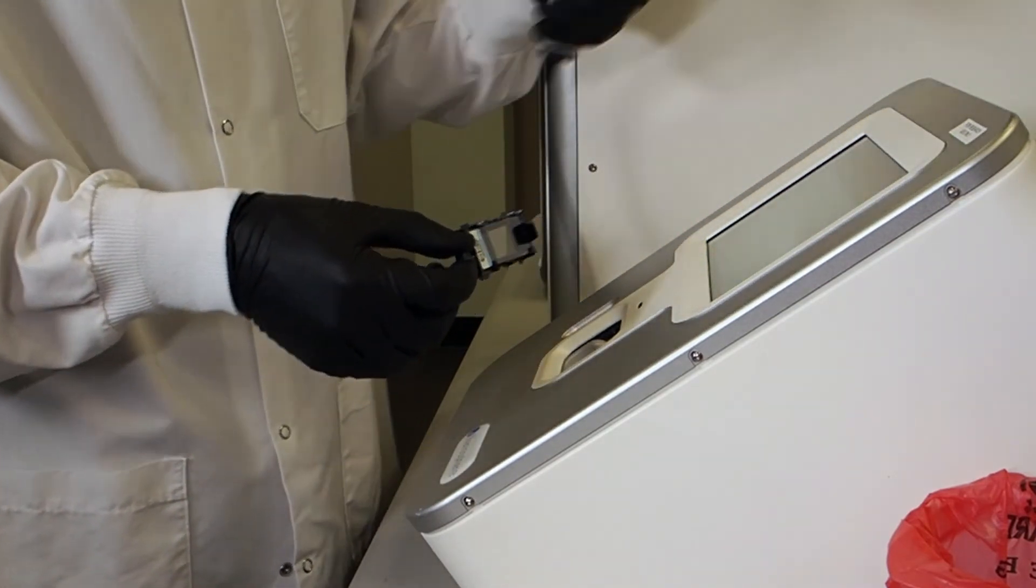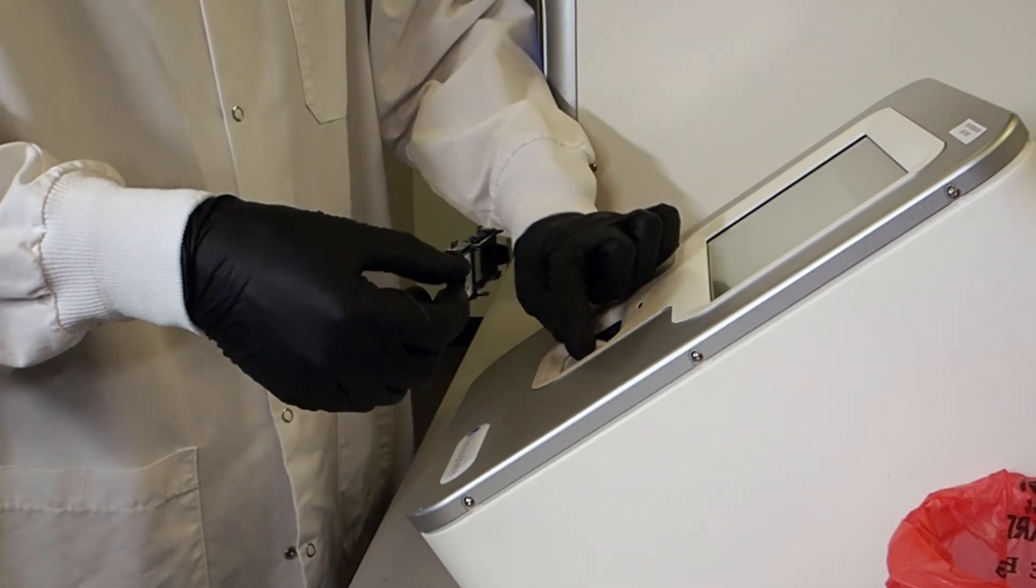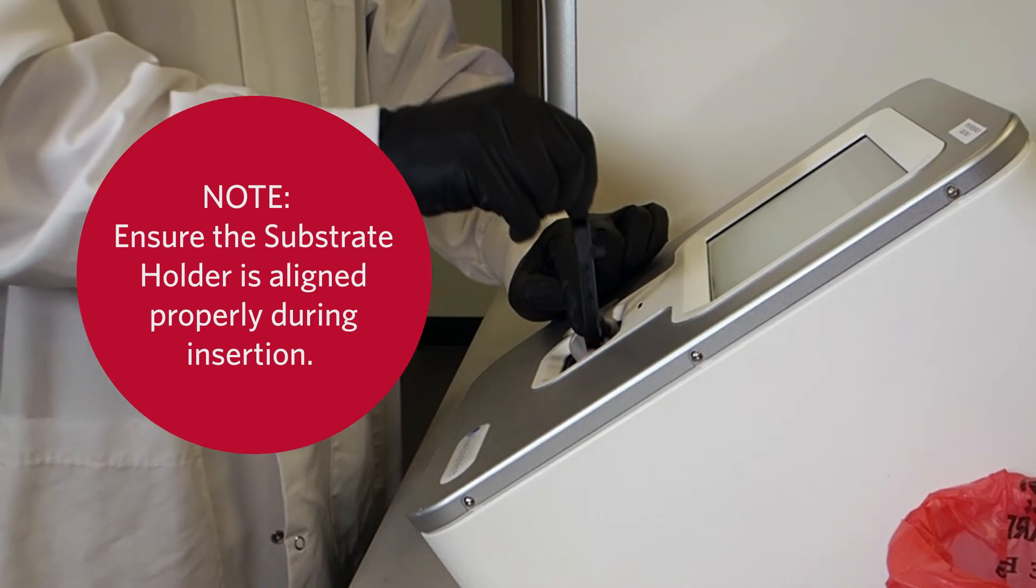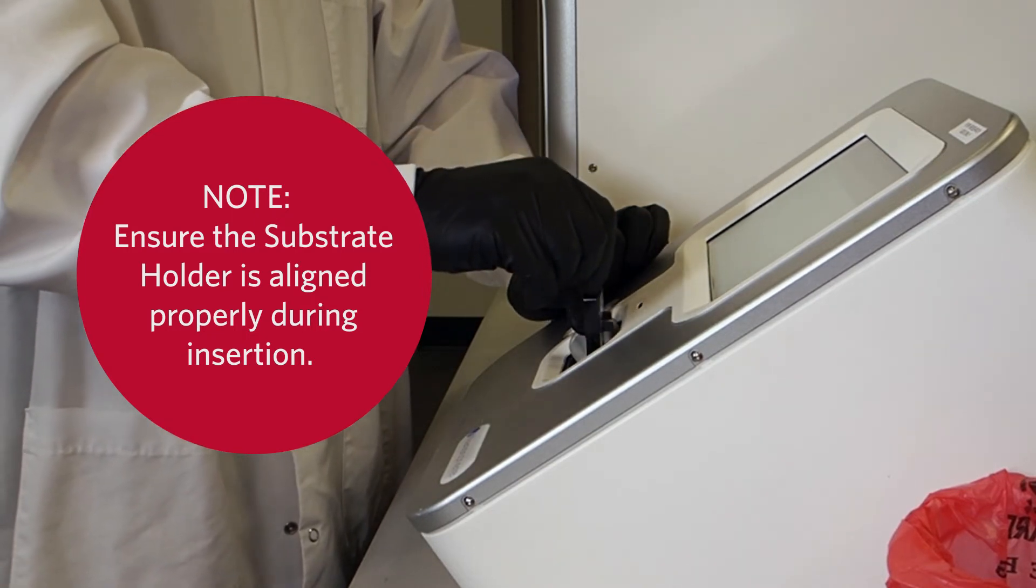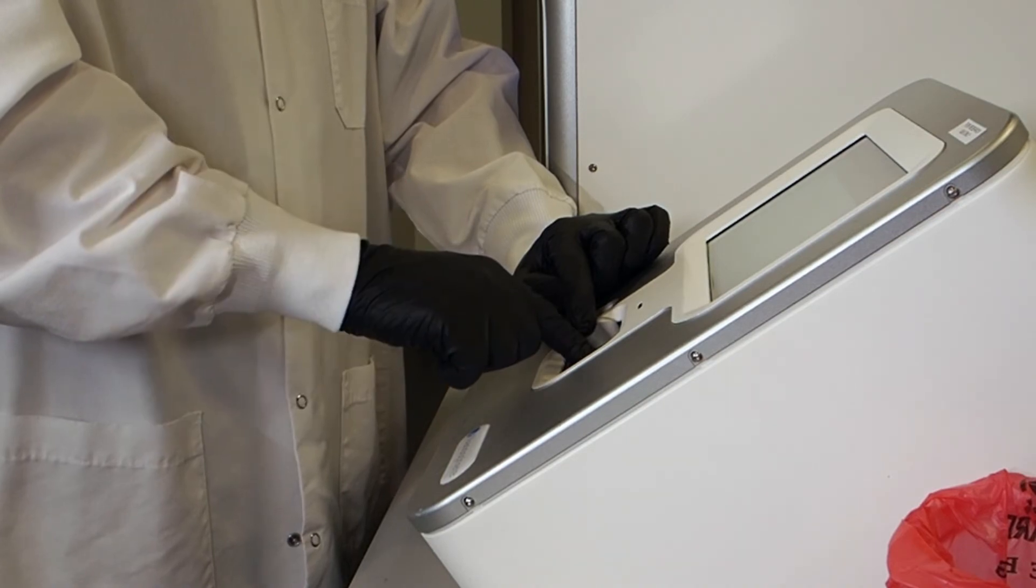Use the barcode scanner to scan the barcode, then insert the substrate into the reader. To ensure the substrate is aligned properly, let the substrate holder drop into the analysis compartment and then press all the way down.